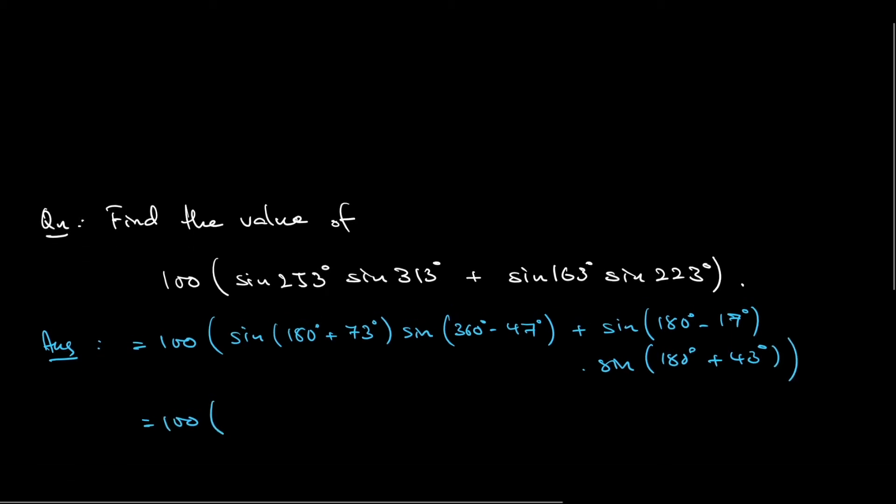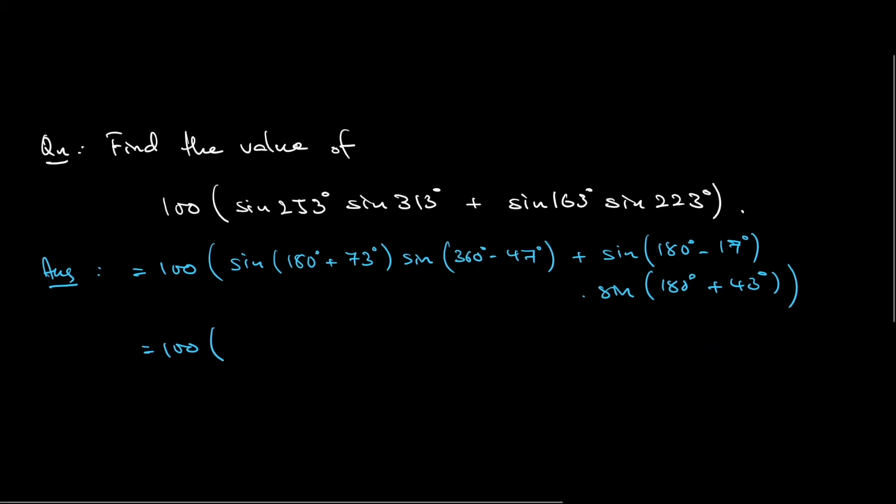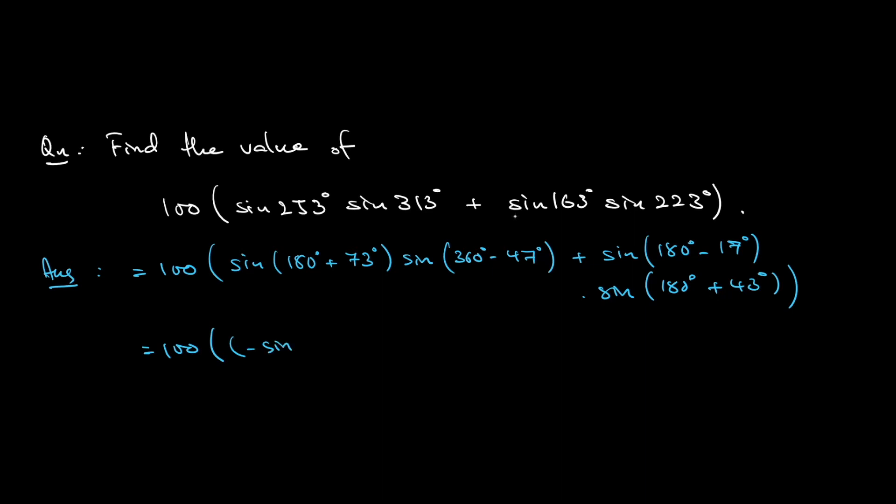So 100 times the same. Sine 180 degrees plus 73 degrees equals negative sine 73 degrees. 360 minus 47 degrees is negative sine 47 degrees.